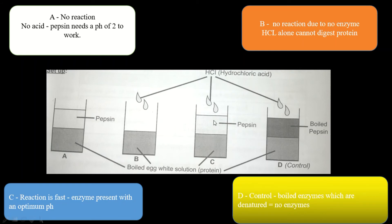In test tube C, pepsin is able to digest the large protein molecules, breaking them down into amino acids which can be absorbed. We are digesting large insoluble molecules into soluble molecules. In test tube D, there is no reaction because the enzyme is boiled — the enzyme is denatured. If the enzyme is denatured, your enzyme will not function at all.